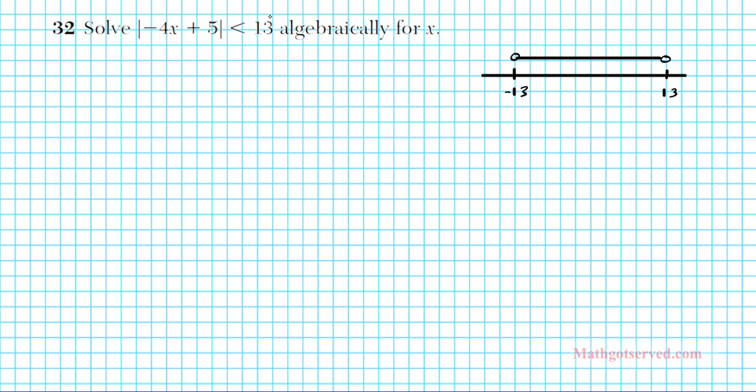Now how do we represent that sandwiched situation using absolute value inequalities? Well, since you're sandwiched between this number and its opposite, we can write this absolute value inequality. The absolute value of negative 4x plus 5 is less than 13 as a sandwiched inequality. We're going to have negative 13 less than this absolute value argument, negative 4x plus 5, and that is less than 13.